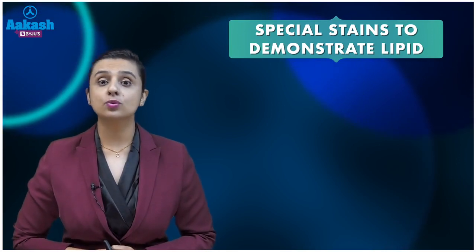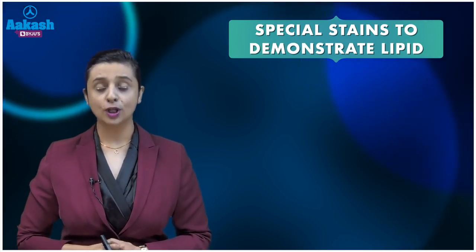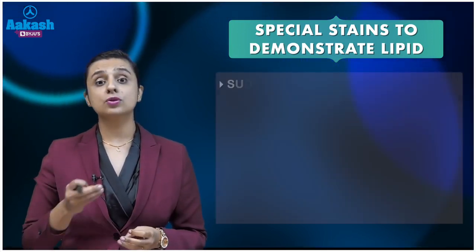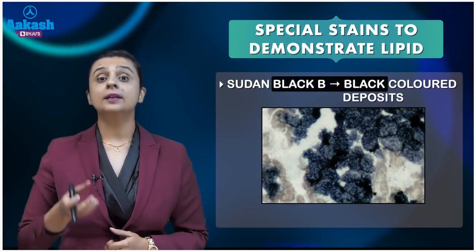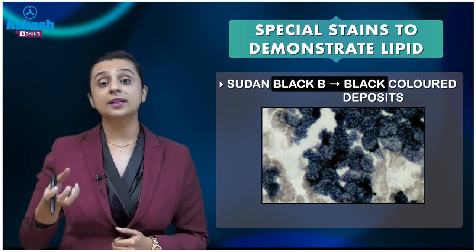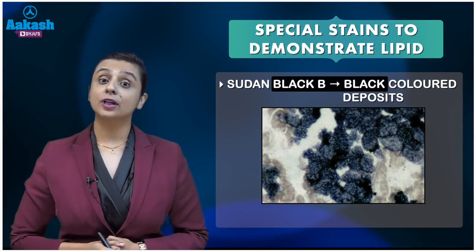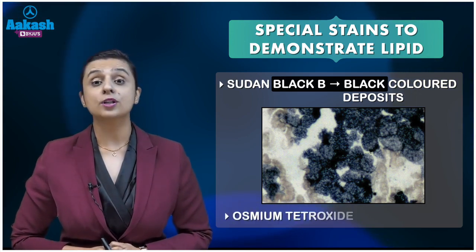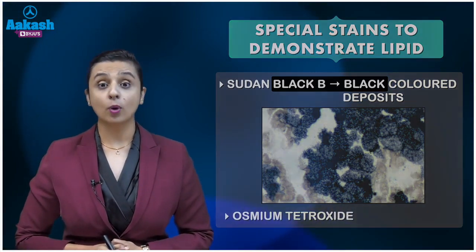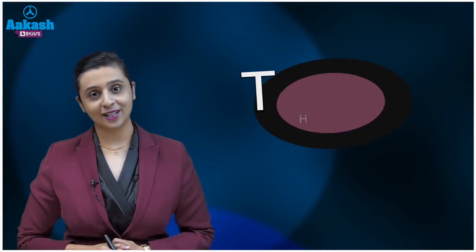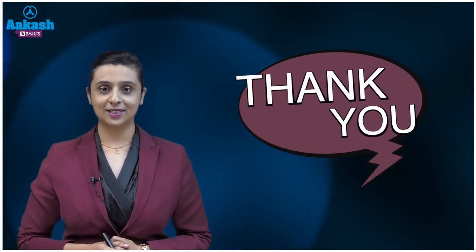The last point is: what are the special stains apart from Oil Red O that can be used to stain fat or lipid deposited in the tissues? We can use Sudan Black — from the name itself you can remember that it demonstrates lipid in the form of black colored deposits. We can also use osmium tetroxide. With this, we have covered Oil Red O. For other special stains, stay tuned to Pathology Bulletin.